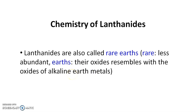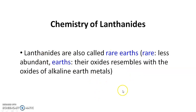Lanthanides are also called rare earths. The word 'rare' stands for less abundant — it means lanthanides are less abundant in the Earth's crust. The word 'earth' stands for the fact that the oxides of lanthanides resemble the oxides of alkaline earth metals, and therefore lanthanides are also called rare earths. But nowadays this word is not used; instead, lanthanides or lanthanons are used, because we can now isolate lanthanides in greater percentages.